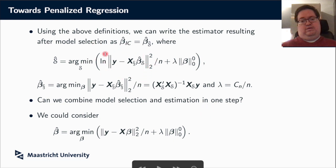We could define information criteria without the logarithm, directly on the sum of squared residuals. Could we minimize the residual sum of squares plus the penalty term directly in one go? Previously we looked at all sets S including or excluding certain variables, choosing whichever gave the lowest information criteria value. But the problem was we had 2^P models to evaluate. If we could do that in one step, we wouldn't need to go through all of those models and sets S.